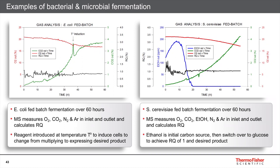Examples of bacterial fermentation processes monitored by mass spectrometry include two fed-batch fermentation processes. In the E. coli fed-batch process, lasting approximately 60 hours, the mass spectrometer monitors oxygen, CO2, nitrogen, and argon in the inlet and outlet, calculating respiratory quotients in real time. At the point when a reagent is introduced, cells change from multiplying to expressing the desired product — observed as the stabilization of the respiratory quotient at about 40 hours, settling to the expected value of 1.